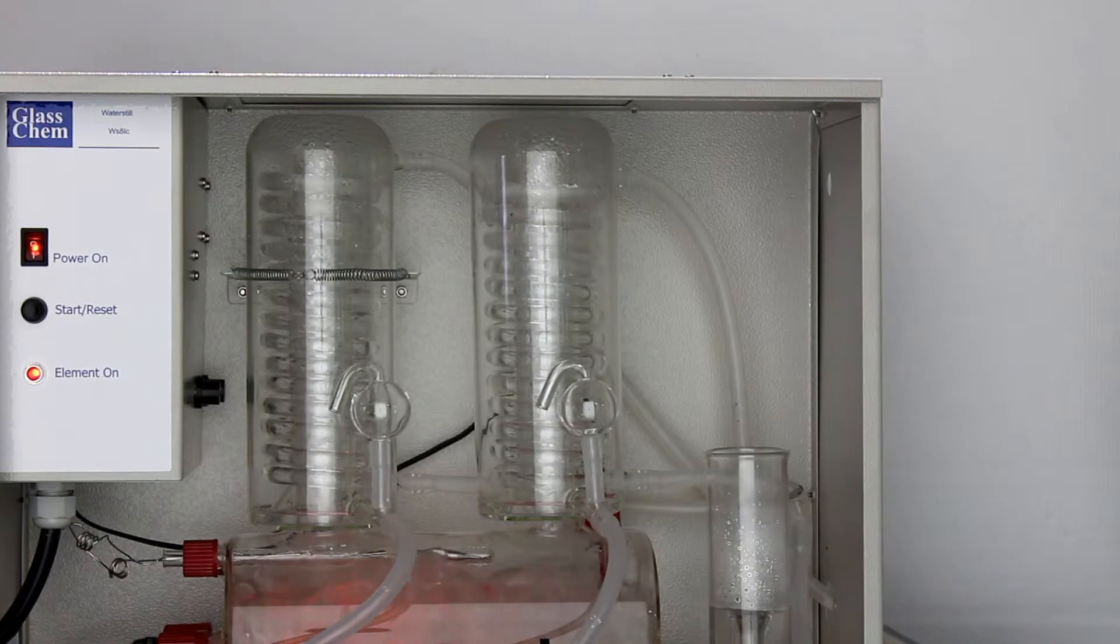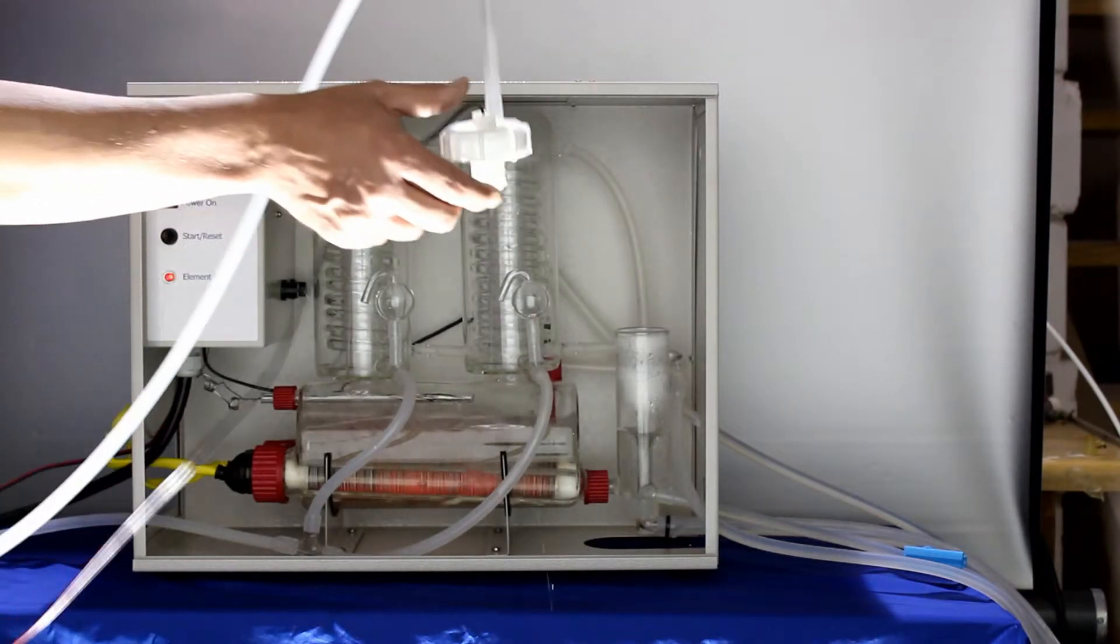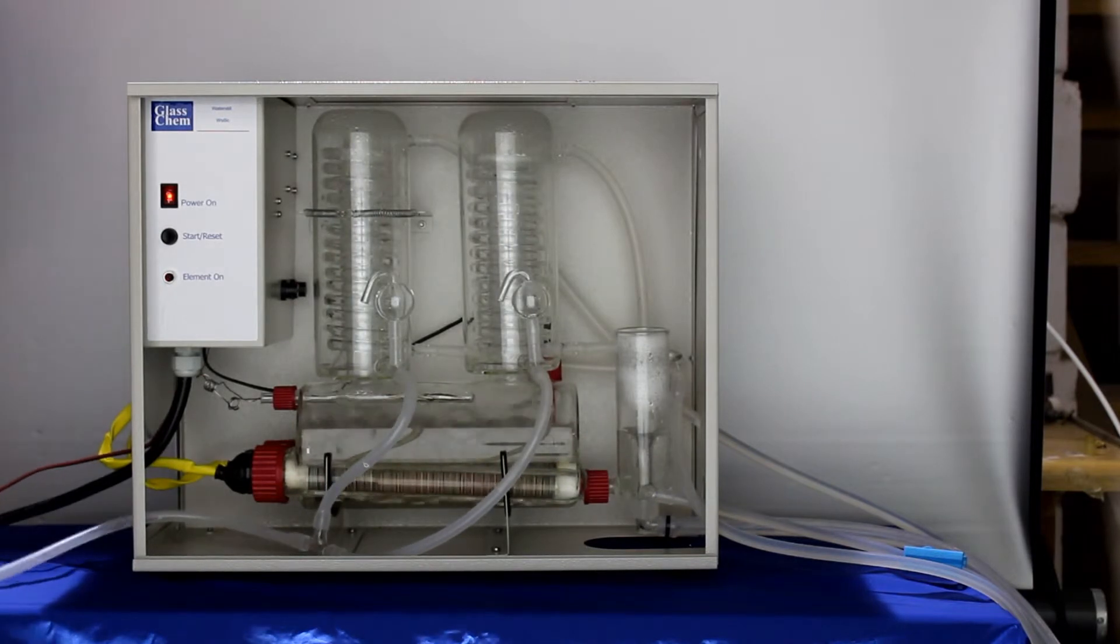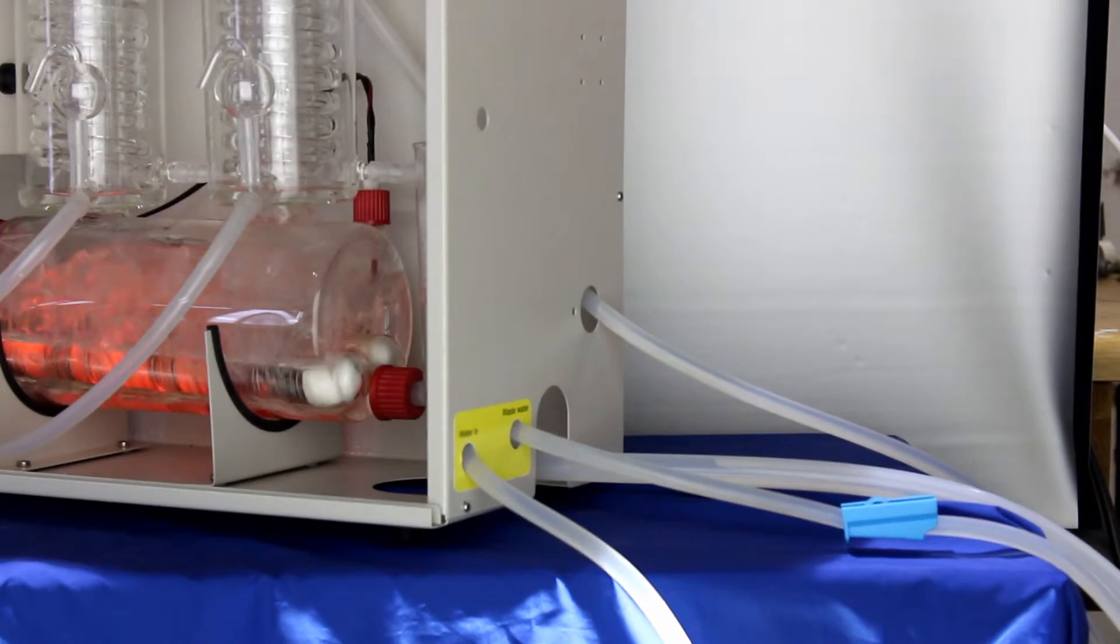The distillate will flow down the tube into the aspirator bottle. The float switch sits on top of the aspirator bottle and will switch the still off when the water level pushes the float to the top of the bottle. The still is now fully operational.